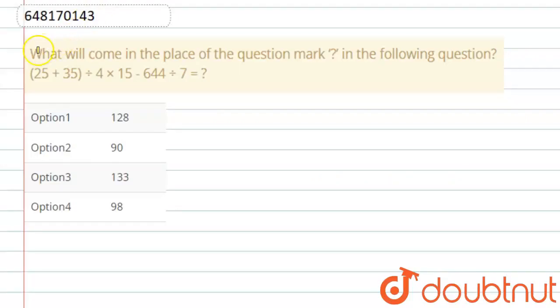Welcome to Doubtnet. Our question is, what will come in the place of question mark in the following question? The given equation is: 25 plus 35 divided by 4 into 15 minus 644 divided by 7 equals question mark.